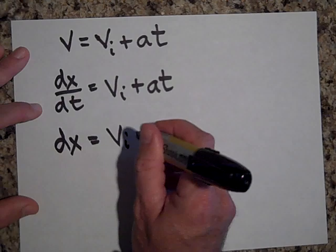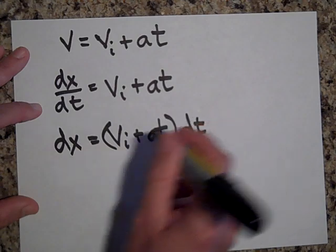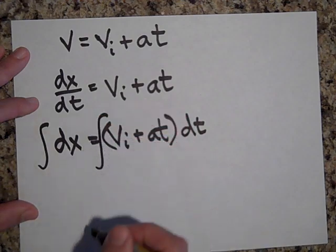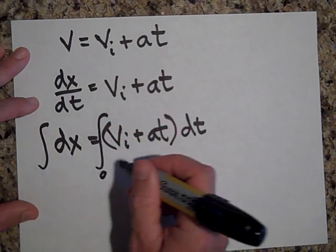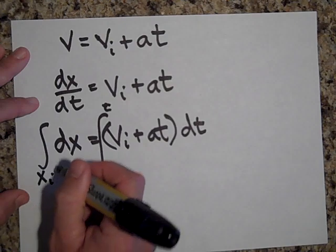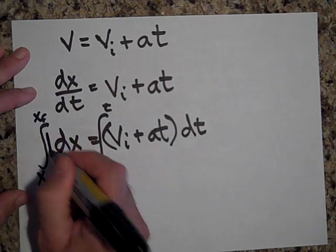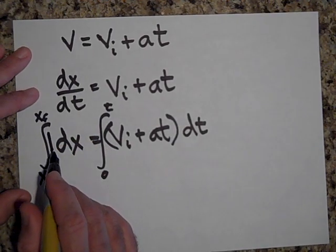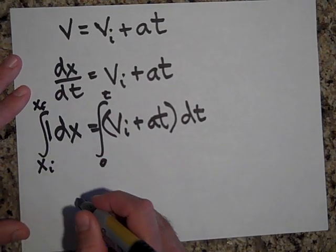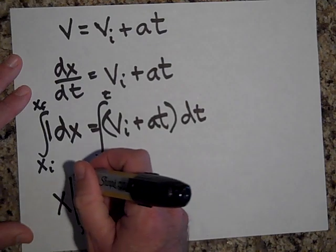So we have dx equals (v-initial plus a·t) dt — I brought the dt to the other side. Now I'll integrate both sides: the right side with respect to time from t equals zero to t, and the left side with respect to x from x-initial to x-final. There's an implicit one here, so I'm taking the antiderivative of one with respect to x, which gives just x.